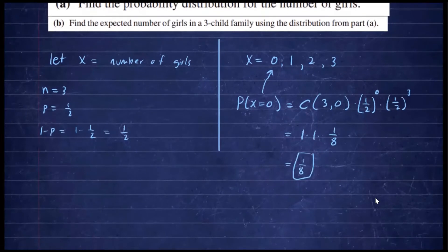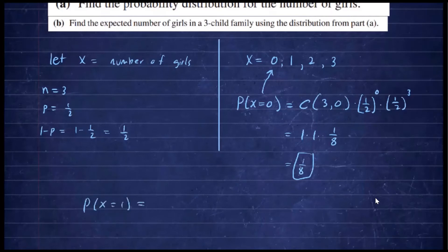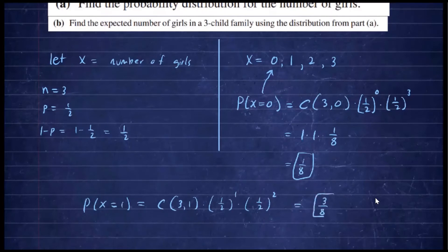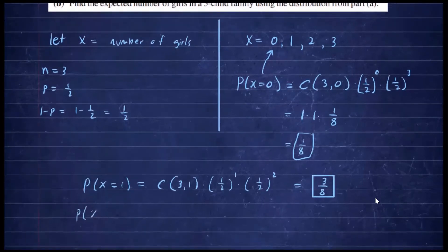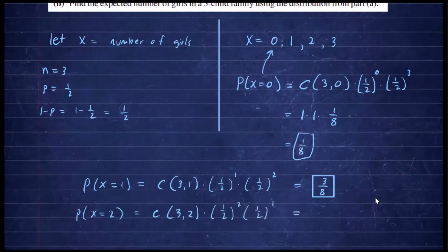Now let's find P(X=1), P(X=2), and P(X=3) the same way. The probability that x equals one — one girl out of three children — is C(3,1) times (1/2)^1 times (1/2)^2, which gives three eighths. For P(X=2), it is C(3,2) times (1/2)^2 times (1/2)^1, which also gives three eighths.